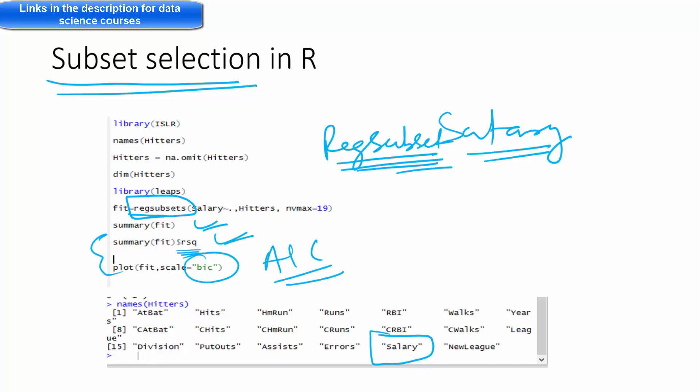The syntax is very simple. You can see the function is regsubsets, salary is the target, and we are going to use all 19 variables.